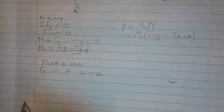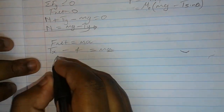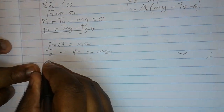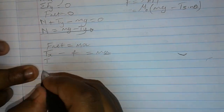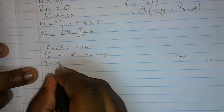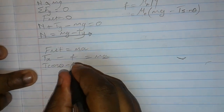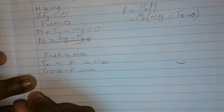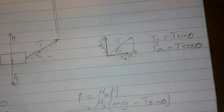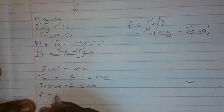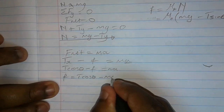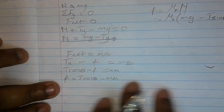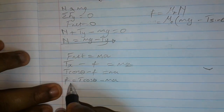So Tx is just T cos θ minus friction equals ma. Therefore, friction equals T cos θ minus ma. You just transpose the values and you find the frictional force. But now we don't know the value of the tension.